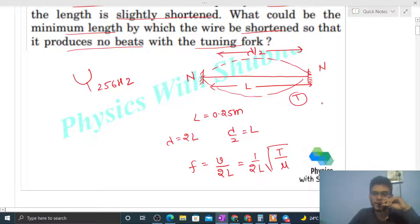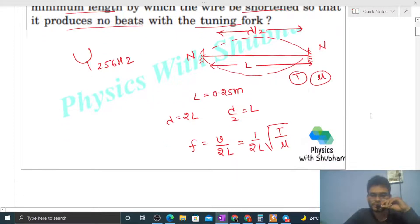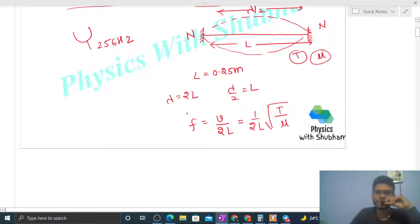So 1/(2L) as it is. Now what is T? T is the tension in this wire, and mu is the linear mass density of this wire. Now you can see, how to find out this fundamental mode of vibration's frequency f value?